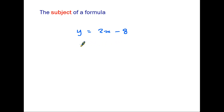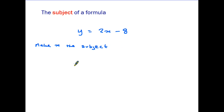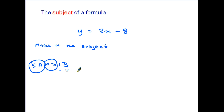Concentrating on this first formula, if y is the subject and we are asked to change that, a question like that would simply say 'make x the subject.' We need to rearrange the equation so that instead of y equals something, we end up with x equals something. If you're familiar with solving equations by rearranging, this will feel familiar. We use BIDMAS backwards — moving subtractions and additions first, then multiplications and divisions, then indices and brackets.